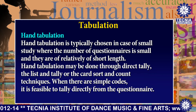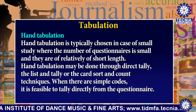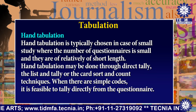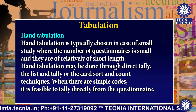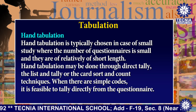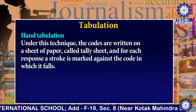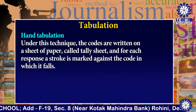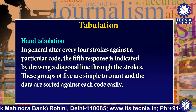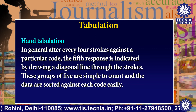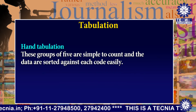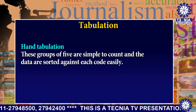Hand tabulation is typically chosen in the case of a small study where the number of questionnaires is small and they are of relatively short length. Hand tabulation may be done through direct tally, the list and tally, or the card sort and count techniques. When there are simple codes, it is feasible to tally directly from the questionnaire. The codes are written on a sheet of paper called a tally sheet and for each response, a stroke is marked against the code in which it falls. After every four strokes against a particular code, the fifth response is indicated by drawing a diagonal line through the strokes. These groups of five are simple to count and the data are sorted against each code easily.